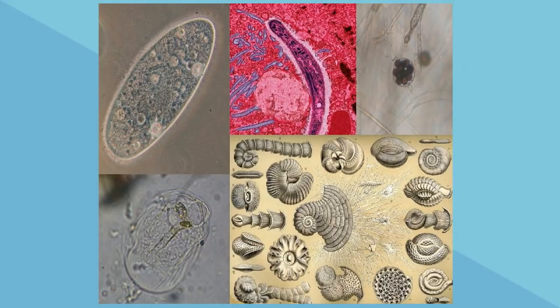Protozoa are single-cell organisms that are found in moist areas. Many of them are parasites, like the plasmodium that causes malaria, a worldwide disease. They live in moist areas, they infect the water, other animals and humans drink the water, and then they become infected.